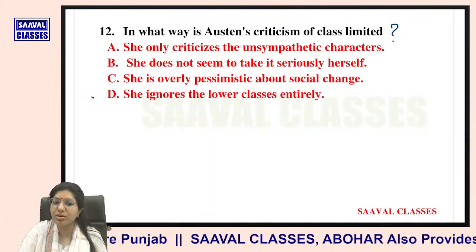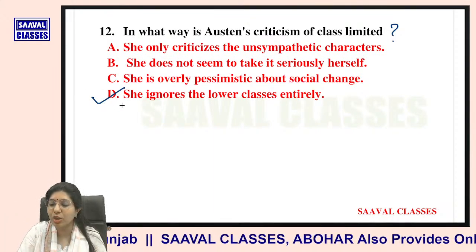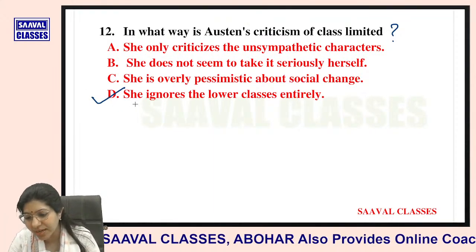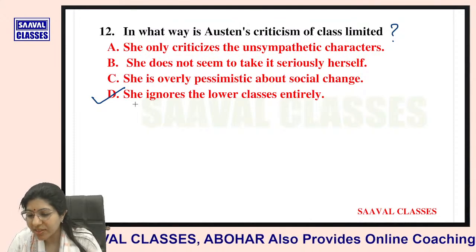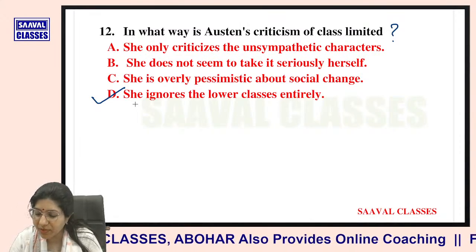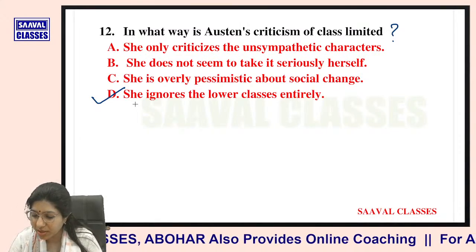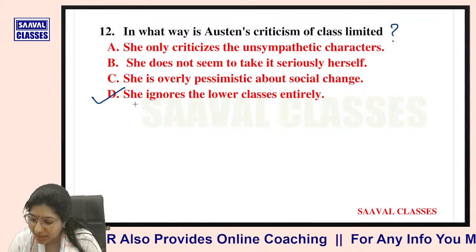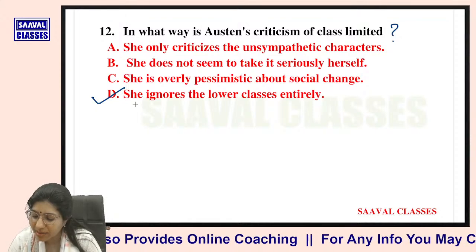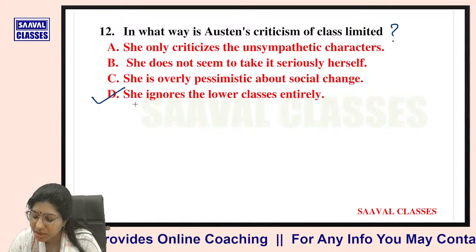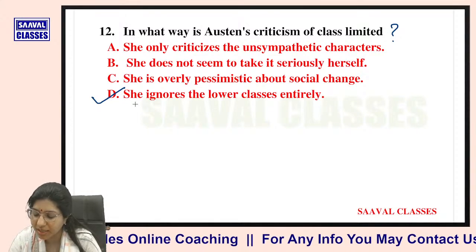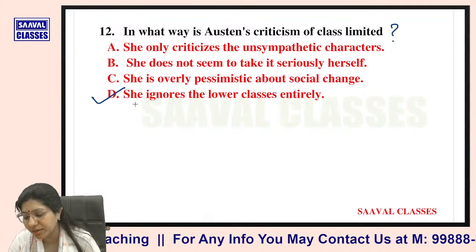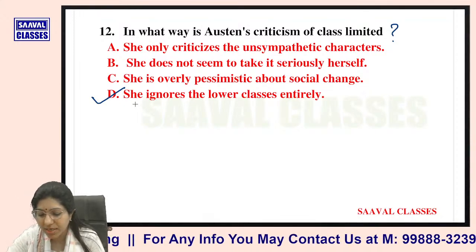The answer is that she ignores the lower classes entirely. Question number thirteen: What is the name of Mr. Knightley's estate in the novel Emma? Options are Hartfield, Maple Grove, Donwell Abbey, or Brunswick Square.